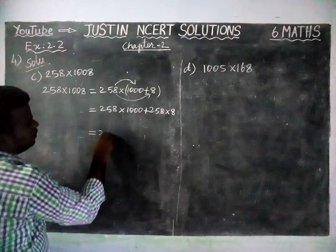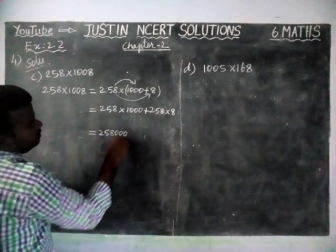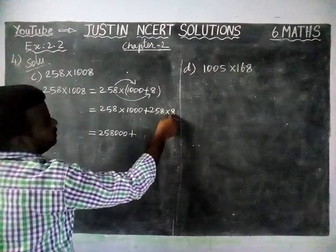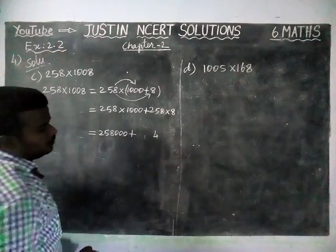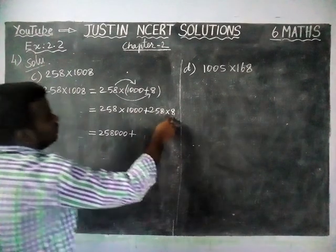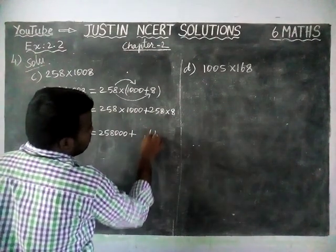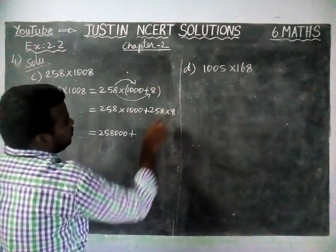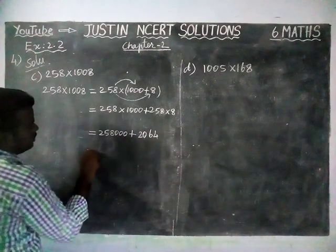When we are multiplying, we are getting the answer. 258 into 1000 gives us 258 with 3 zeros. Now plus: 8 eights are 64, so write 4, carry 6. 8 fives are 40, plus 6 is 46, write 6, carry 4. 2 eights are 16, plus 4 is 20. So the answer is 2064.